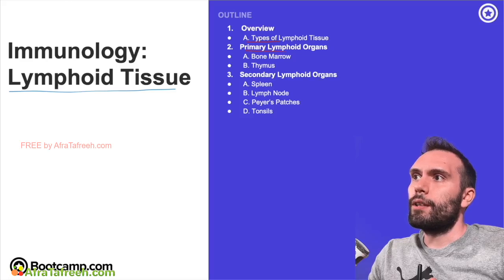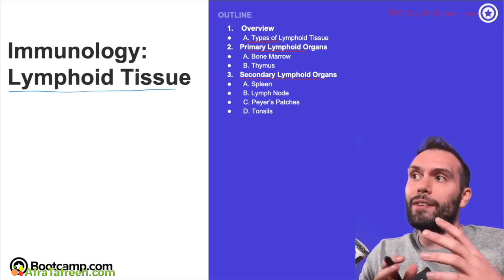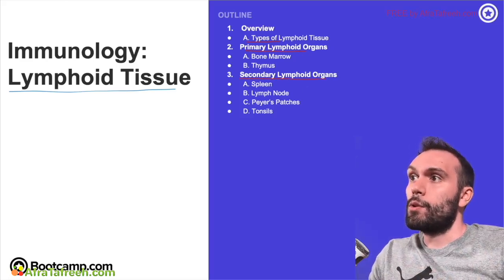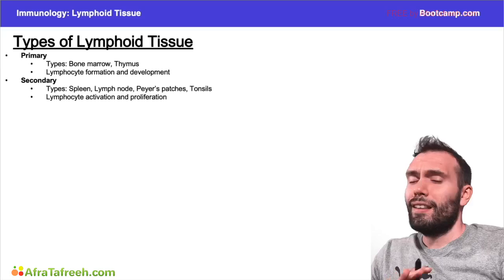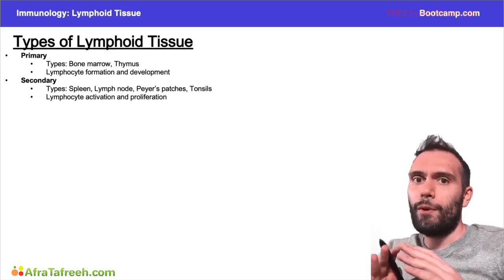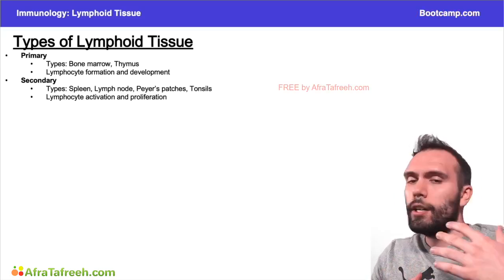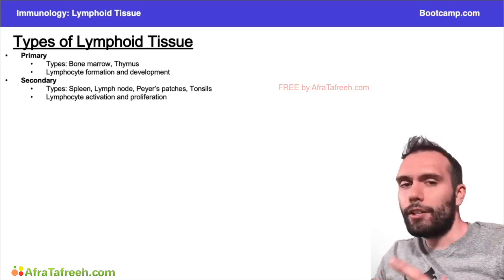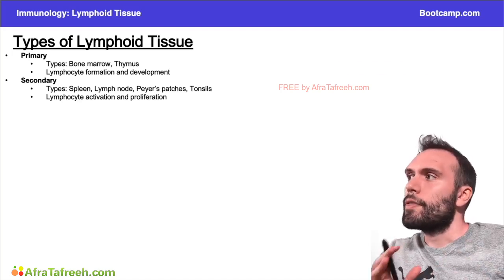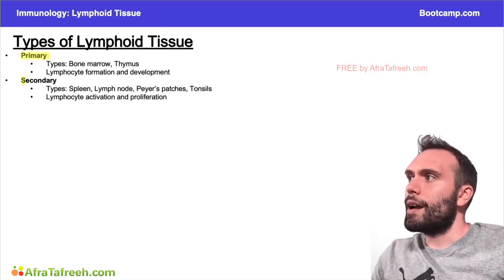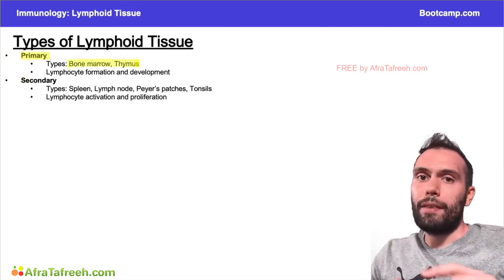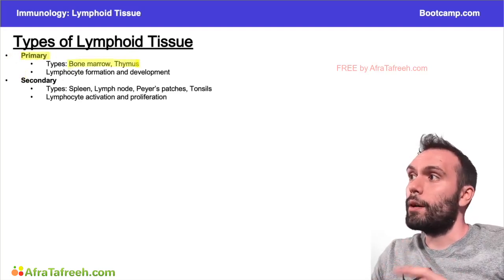We'll talk about some of the primary lymphoid organs, and then towards the end of this chapter, we'll talk about the secondary lymphoid organs, most notably the spleen and the lymph node. So when we're talking about lymphoid tissue, the way to organize this in your brain is to just organize this into primary and secondary types. The two big primary ones being the bone marrow and the thymus.